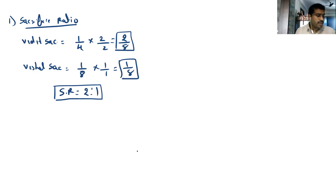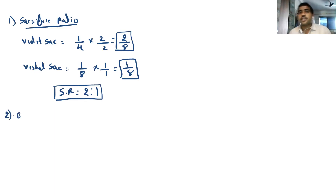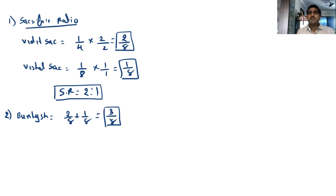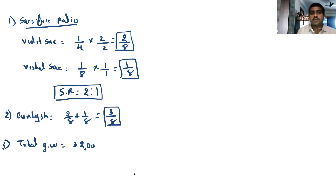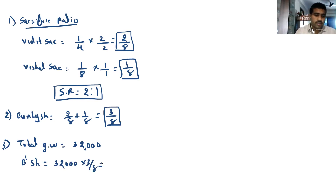Bunty will bring 72,000 as capital and his share of goodwill in cash. Bunty's share is not given, so we find it: Bunty's share = 2/8 + 1/8 = 3/8. Total goodwill is 32,000. Bunty's share of goodwill = 32,000 × 3/8 = 12,000. Journal entry: Cash account debit to Premium for Goodwill — 12,000.